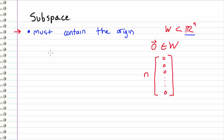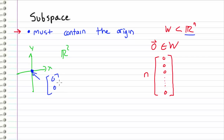For example, if we consider the vector space R2, which is just the xy-plane, then for any subspace of R2, that subspace must contain the origin, which is the vector (0, 0). Since we are in R2, we deal with two-dimensional vectors, which is why our zero vector has two entries.